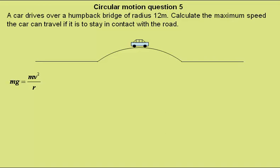Well, in this situation, the weight of the car, Mg, being the force down, must equal the centripetal force needed to give the car its circular motion as it goes over the hump.